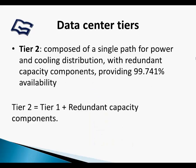Tier 2 is composed of a single path for power and cooling distribution, with redundant capacity components, providing 99.741% availability.